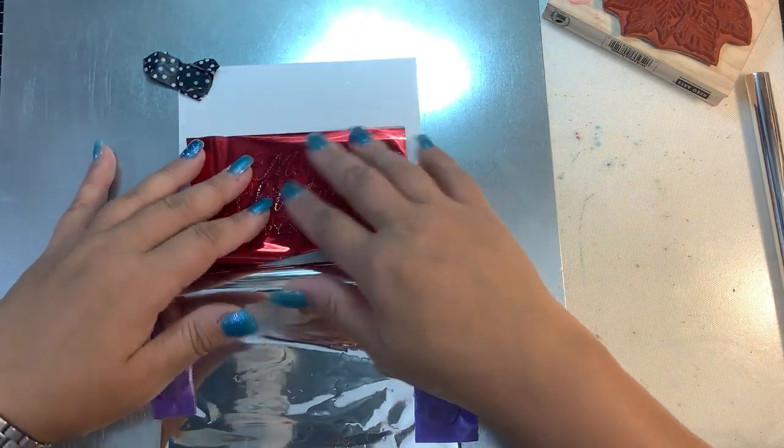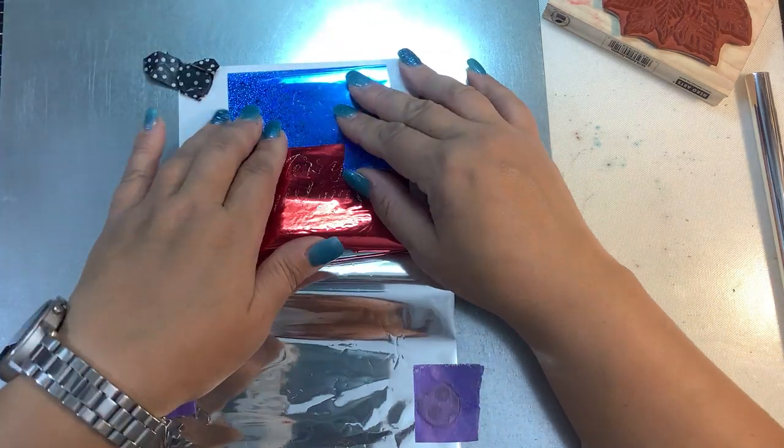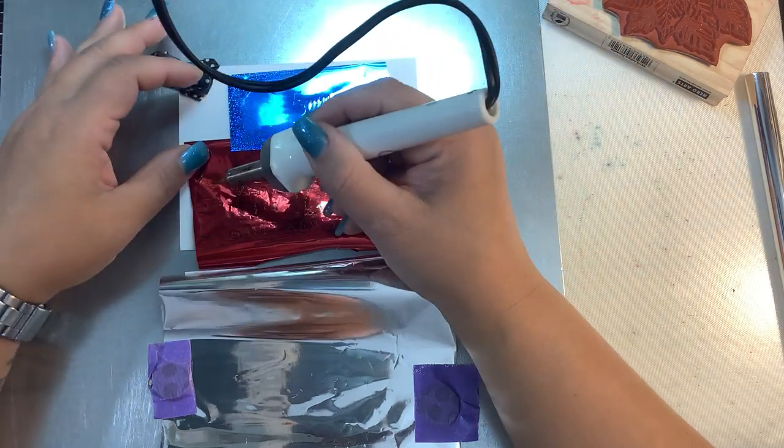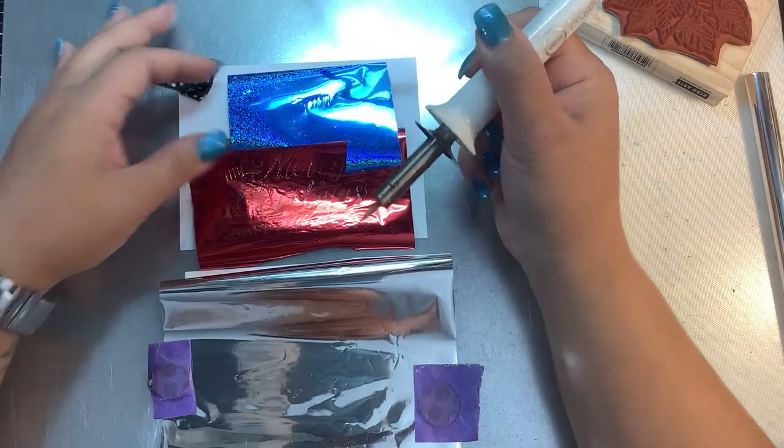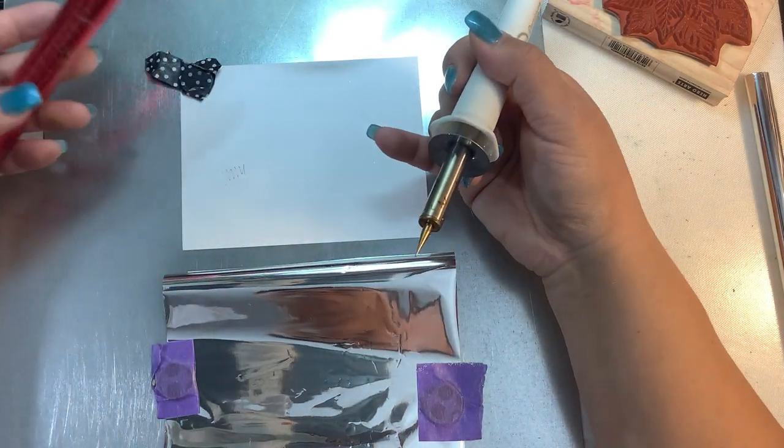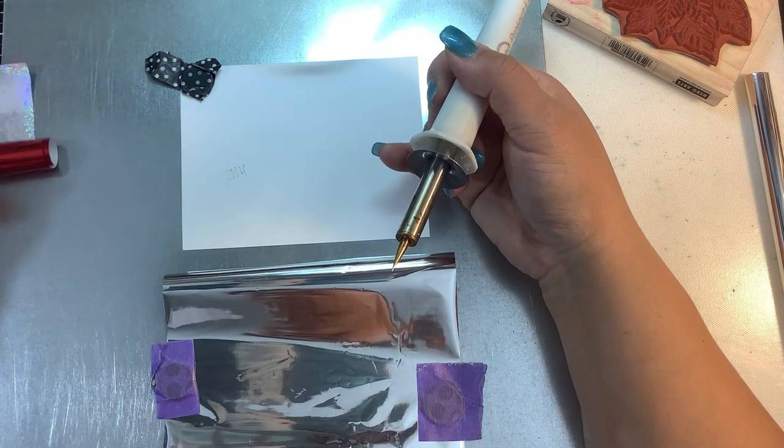Now I know someone's going to argue with me and say that's not true. So here is a piece of like Deco foil. Here's a piece of Gina K foil. And I will show you when you take heat to these, because there is no heat to stick it to the paper. There's no adhesive. See, they will not stick to the paper.